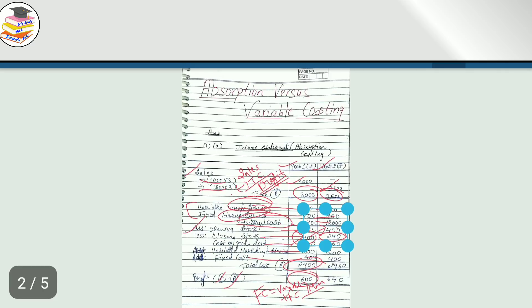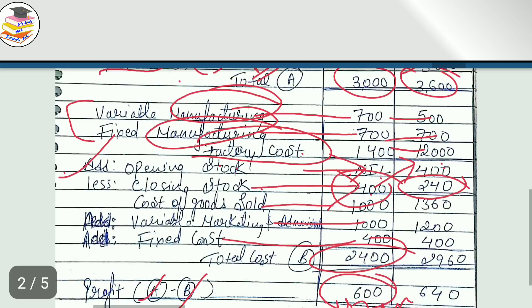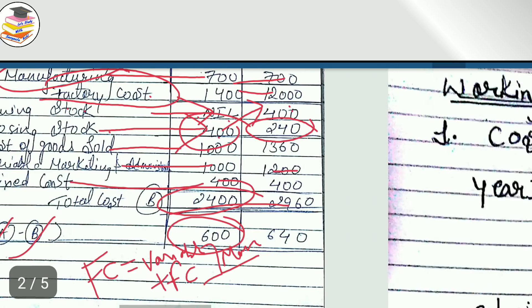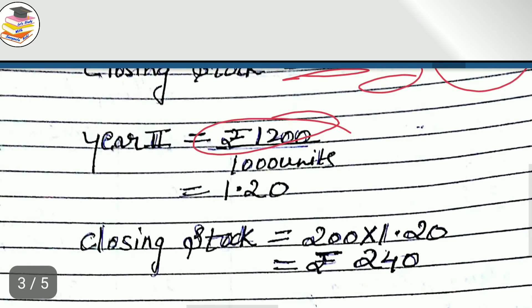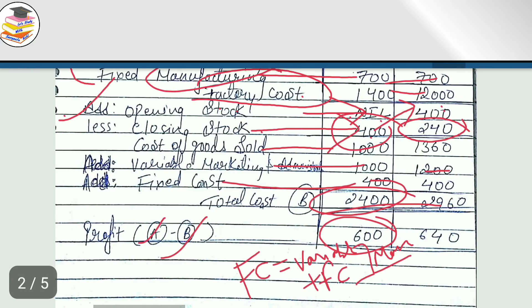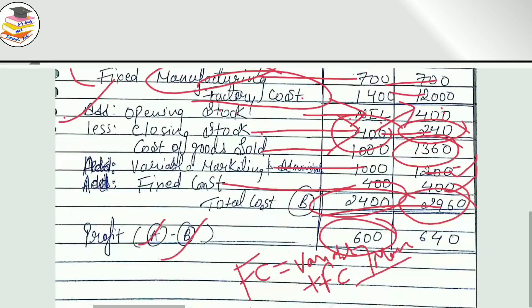Year 2 factory cost is Rs. 1,200. The formula: 1,200 divided by 1,000 units = Rs. 1.20 per unit. Closing stock of 200 units into Rs. 1.20 = Rs. 240. This Rs. 240 is deducted. Then add variable marketing, administration and fixed costs to get total cost, subtract from sales to get profit. That completes your income statement using absorption costing.